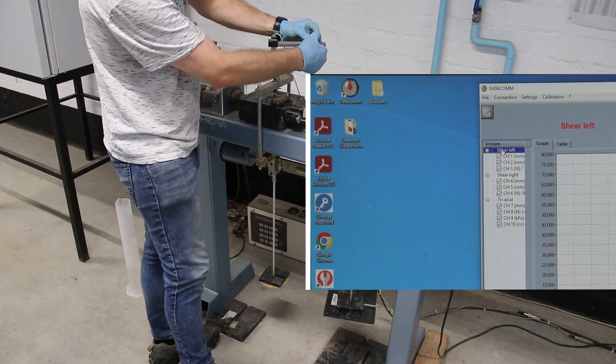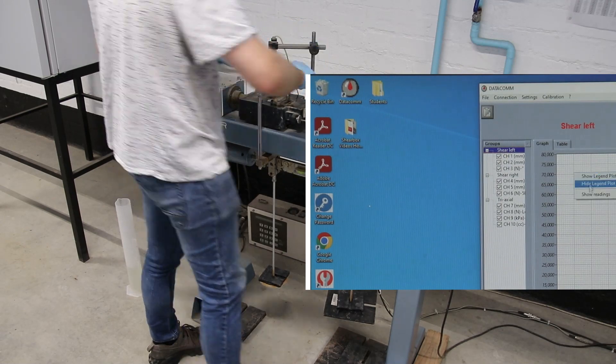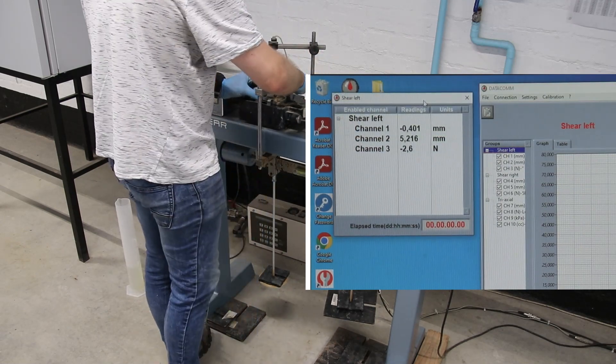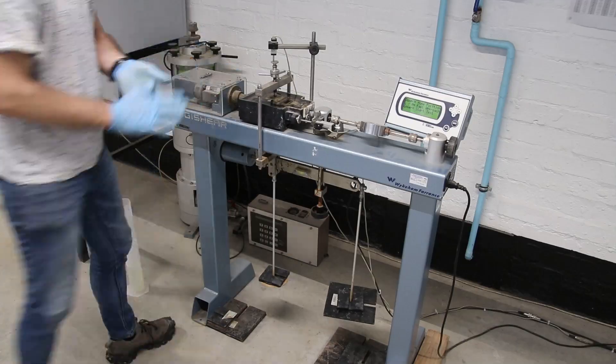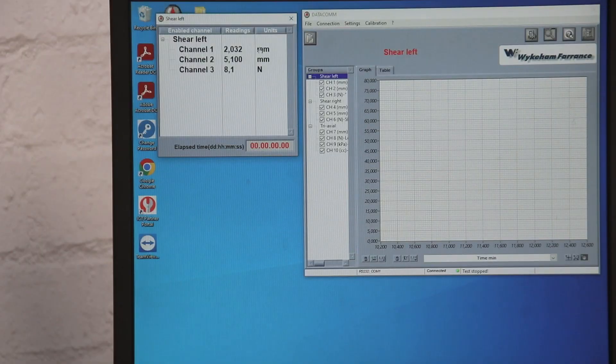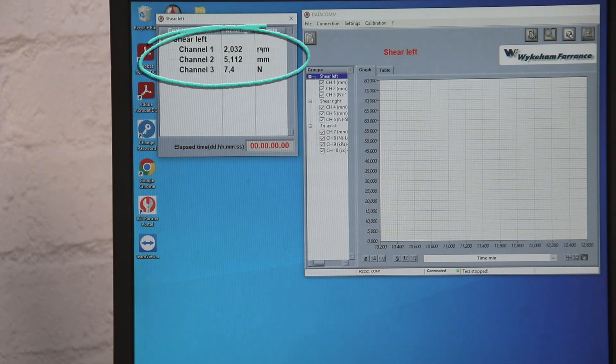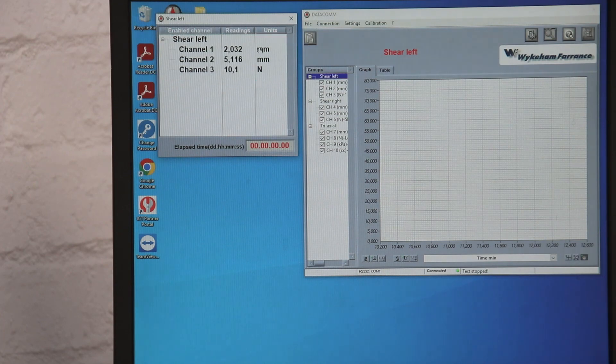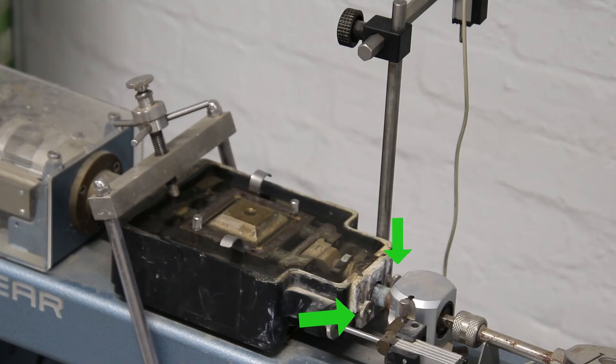At the computer, open the Datacom app. Right-click on the chart to bring up the menu. Click on show readings to check if all measuring devices are working. Make sure that the vertical LVDT has a reading between 2 mm and 5 mm. Make sure that the horizontal LVDT also has a reading between 2 mm and 5 mm. Make sure the force reading is in the positive but not exceeding 10 N. Back to the shear box, make sure the two tightening nuts are in contact with the shear box.